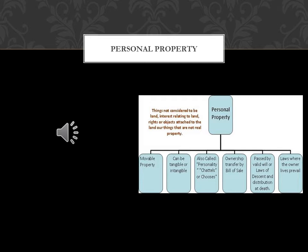A tangible item is an item that can be physically felt or touched. For businesses, tangible personal property includes items the business owns such as: office furniture, business equipment, business vehicles, and business goods.